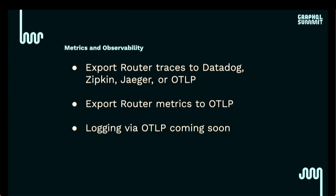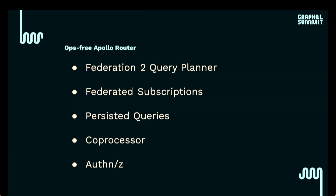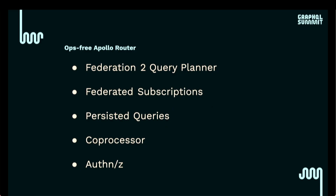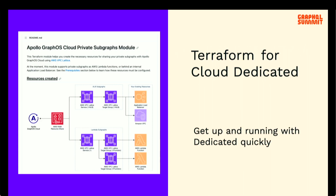You also get all of the features of the Apollo Router ops-free. This includes commercial features that previously required an enterprise license — like federated subscriptions, persisted queries, coprocessor, authentication, and schema authorization. We have other commercial features coming later this year, and one of the fantastic parts about Dedicated is that you're always getting the latest version of Apollo Router unless you need to pin it. Whether you're doing a POC or already in production, it's a great way to add new features to your supergraph. We also have a Terraform module for Dedicated to quickly provision AWS Lattice in your AWS environment, and we're working on Terraform support for more parts of Dedicated.